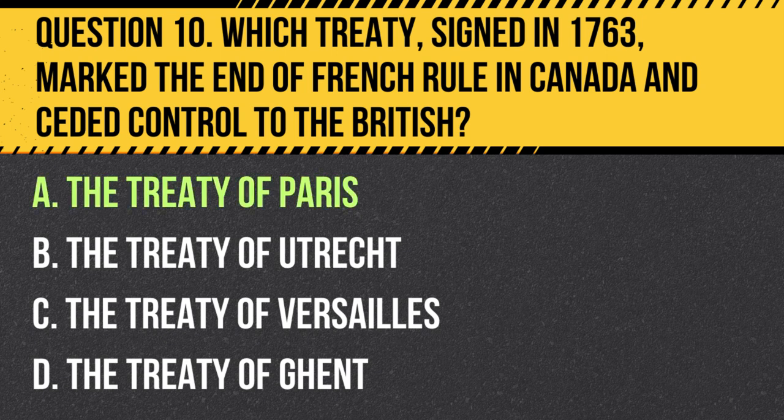Answer: A. The Treaty of Paris. The 1763 Treaty of Paris ended the Seven Years' War and resulted in France ceding most of its North American territories to Britain.